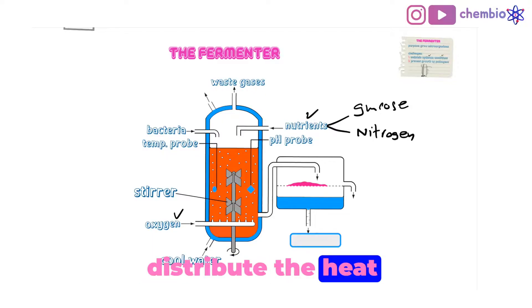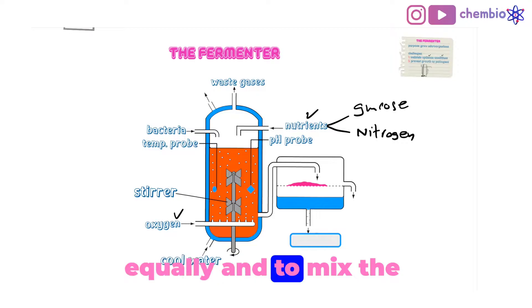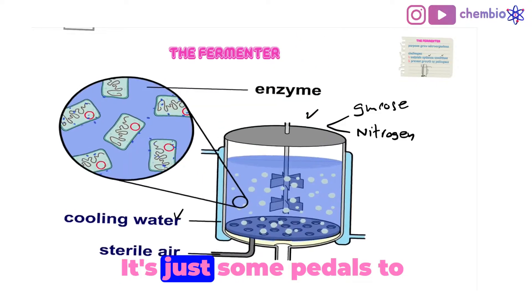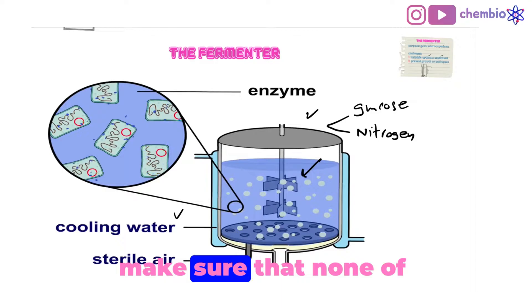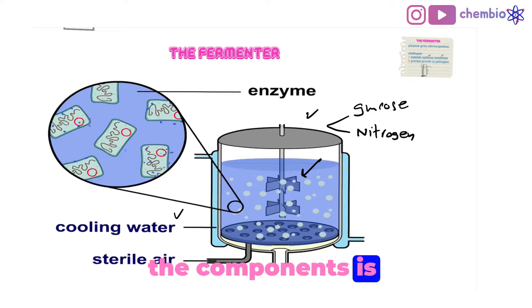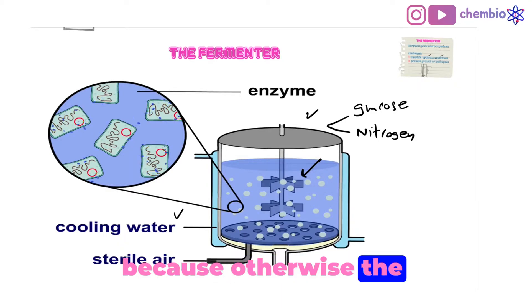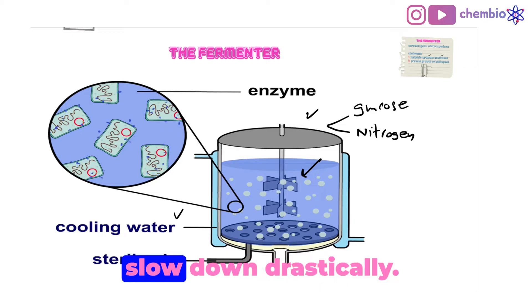You can see here how this stirrer basically works. It's just some pedals to rotate continuously and make sure that none of the components is settling at the bottom. Because otherwise, the rate of reaction would slow down drastically.